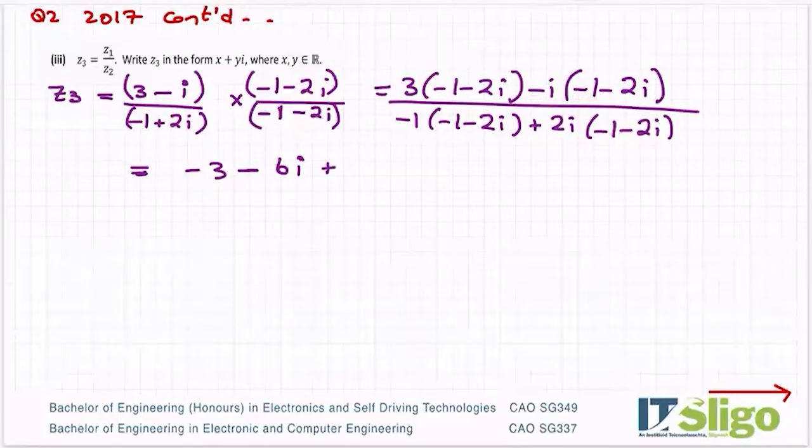And then minus i by minus two i. So let's do the signs: minus by minus is a plus, two times one here is two, i by i is i squared.